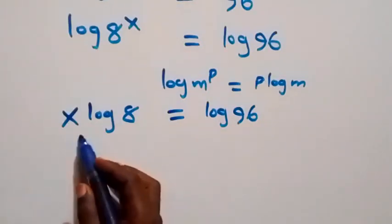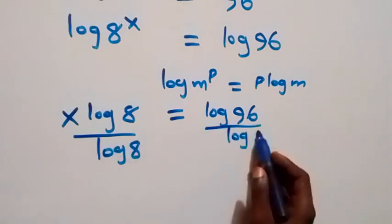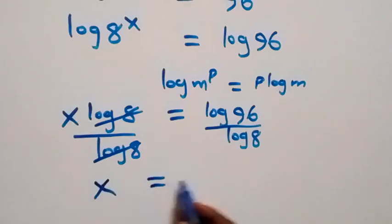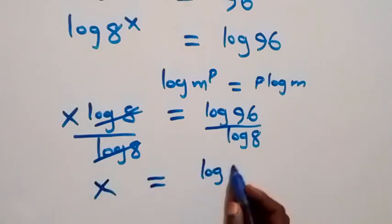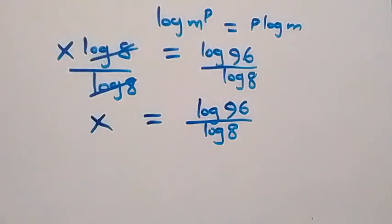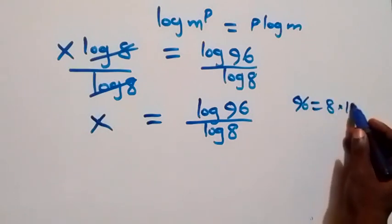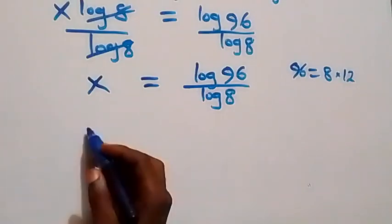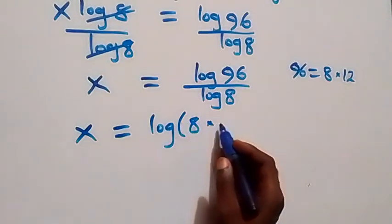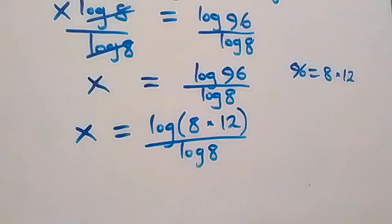The next step: we divide both sides by log(8). Log(8) cancels, leaving x = log(96)/log(8). From here, we can write 96 as 8 times 12, so x = log(8×12) / log(8).